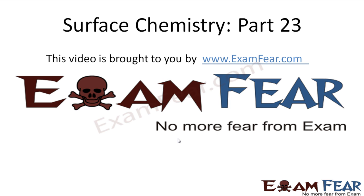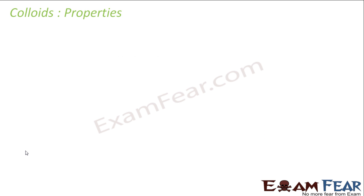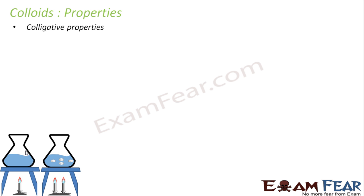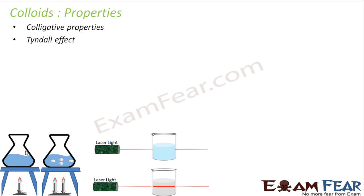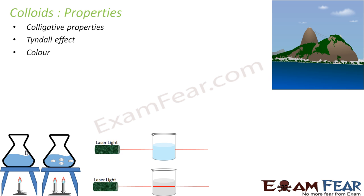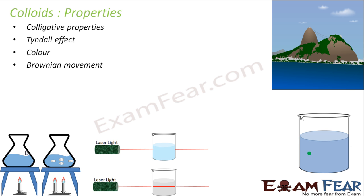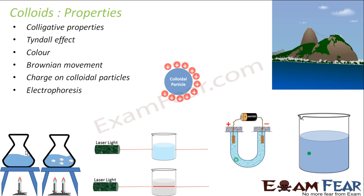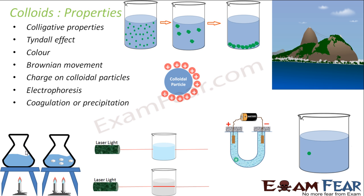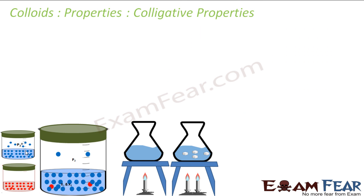Hello friends, this video on surface chemistry part 23 is brought to you by examfia.com. We have already seen what colloidal colloids are, how to prepare them, and how to purify them. Now let's see some properties of colloids. We'll cover seven properties: colligative properties, Tyndall effect, color, Brownian movement, charge on colloidal particles, electrophoresis, and coagulation or precipitation of colloidal particles. Let's start with colligative properties.